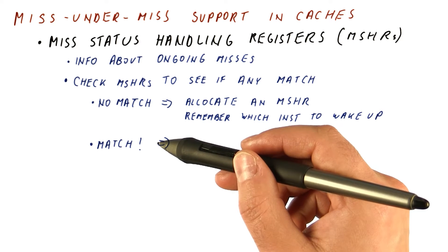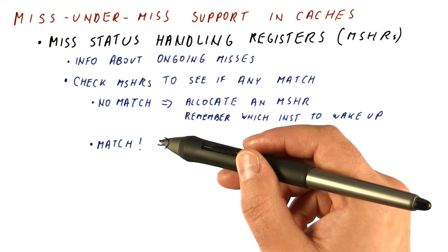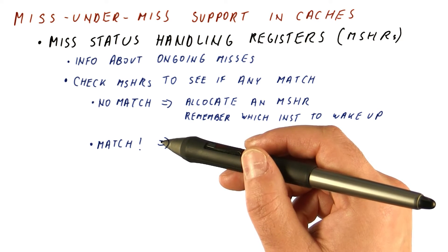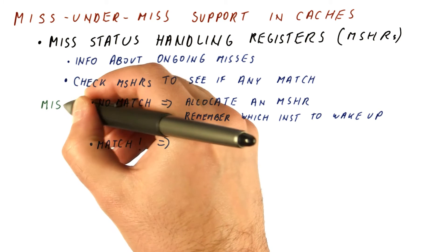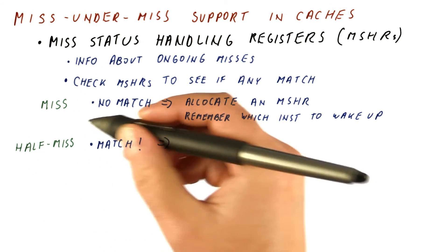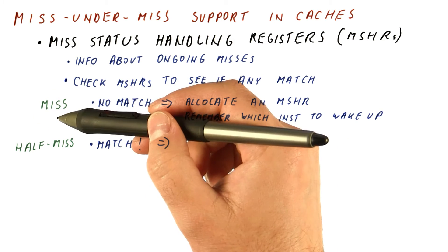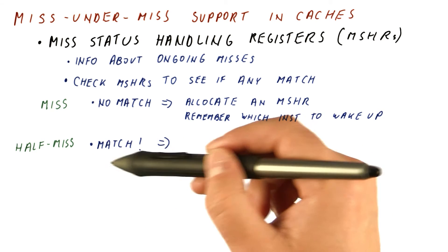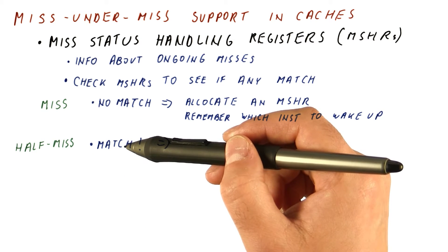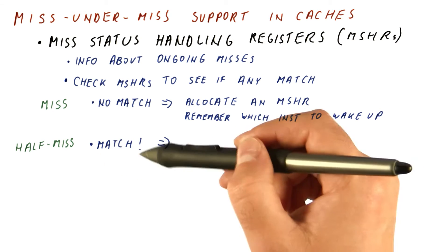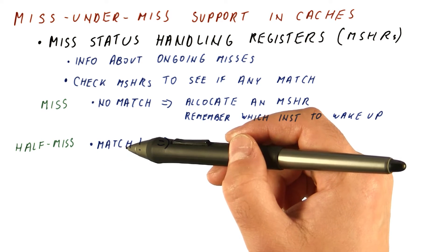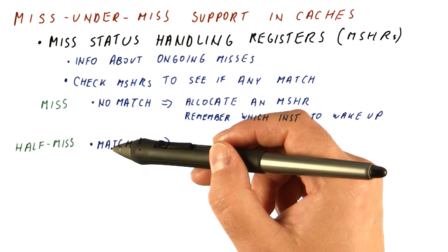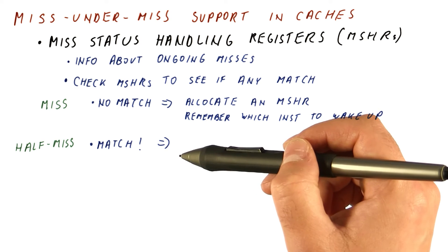If there is a match, that means we tried to find data from a block that had a previous miss already sent to memory but that hasn't come back yet. So really, if we did things one at a time, this would not be a miss. We call this a half-miss, because a true miss is one we would have even with blocking caches, whereas this is a miss that would be a hit if we did blocking — because we allowed the processor to check the cache before previous misses came back, some new accesses are not finding the data in the cache even though the data is already on the way.